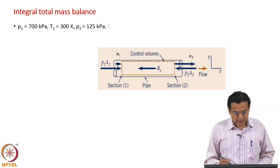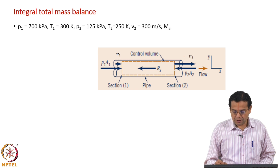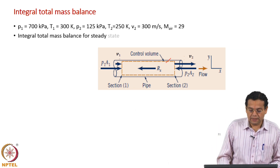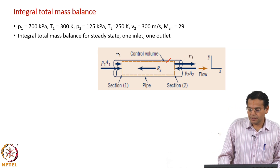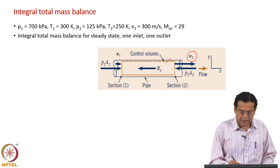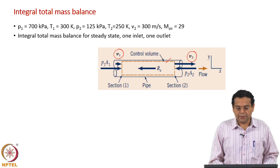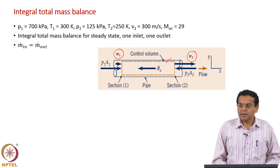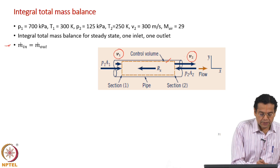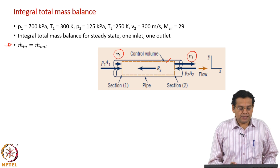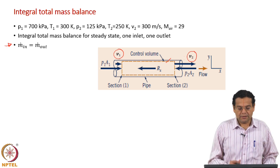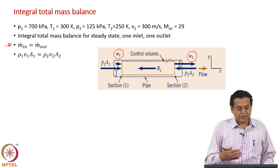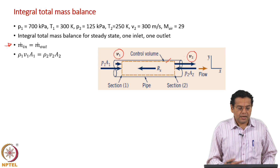Let us proceed with the control volume, which is shown along with the control surface. Let us write the integral total mass balance to begin with, because we are given the exit velocity and need to find the inlet velocity — something similar to what we had done in the previous example. With one inlet and one outlet, the integral mass balance simplifies to m-dot-in equals m-dot-out, but this must be expressed in terms of density, velocity, and area.